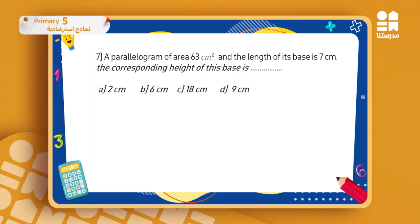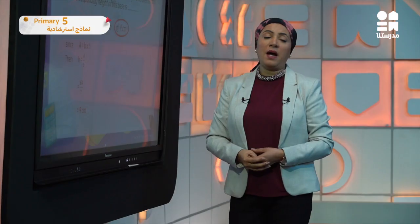The last question: a parallelogram has an area of 63 centimeters squared and the length of its base is seven centimeters. Using the formula area equals base times height, I rearrange to get height equals area over base. So height equals 63 divided by seven, which is nine centimeters. My choice will be letter D, nine centimeters.